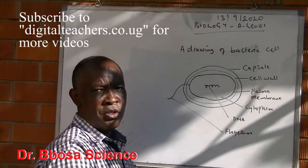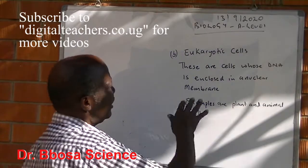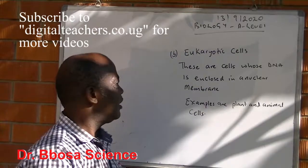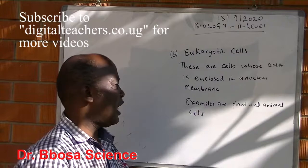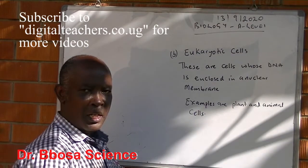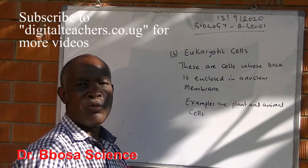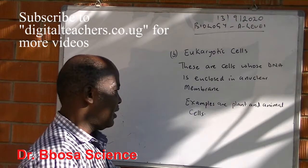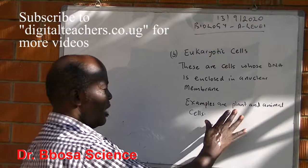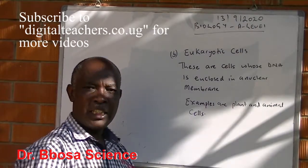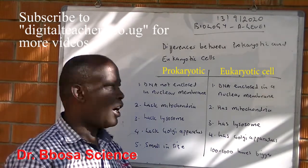The second type of cell is eukaryotic cells. These are cells whose DNA is enclosed in a nuclear membrane. Actually, most of its organelles are enclosed within membranes. Examples of eukaryotic cells include plant cells and animal cells.